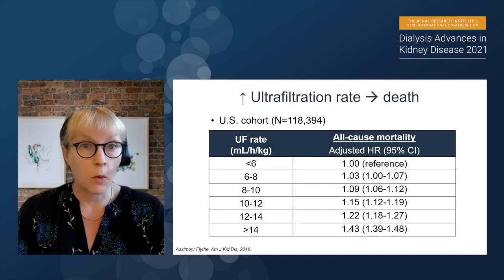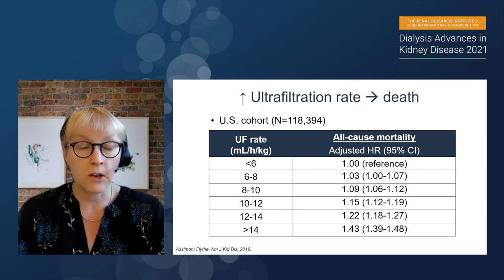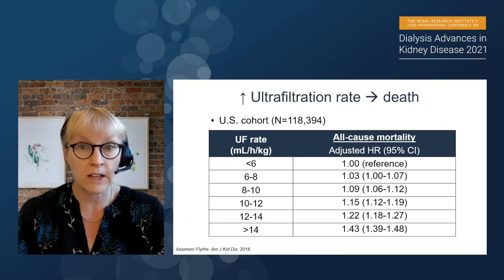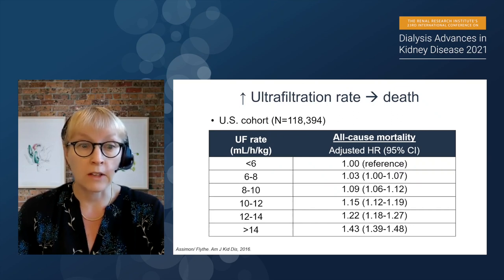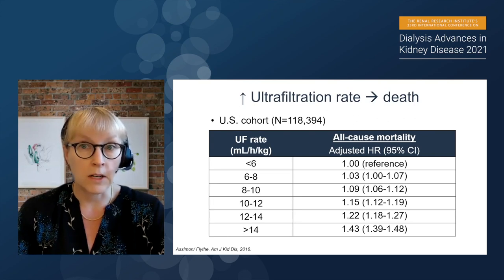On one end of the spectrum, we know that at least in observational data, higher ultrafiltration rates have been associated with a higher risk of death. This is from a large cohort study looking at data from close to 120,000 patients from a large dialysis organization. We showed that the risk associated with higher ultrafiltration rates begins at rates as low as 6 mLs per hour per kg, and rises incrementally to greater than 13 mLs per hour per kg.